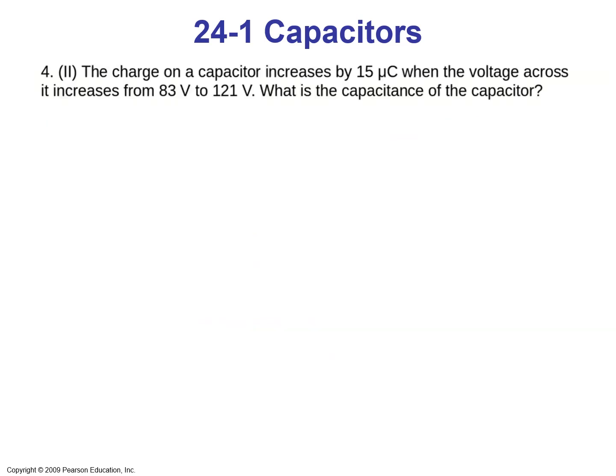Let's look at problem number 4 from the book as an example. The charge on a capacitor increases by 15 microcoulombs when the voltage across it increases from 83 volts to 121 volts. What is the capacitance of the capacitor?